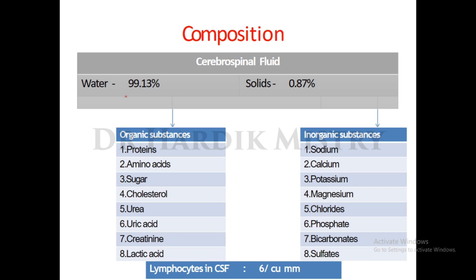Composition of CSF: water 99.13%, solids 0.87%. The solids include organic substances such as proteins, amino acids, sugar, cholesterol, urea, uric acid, creatinine, and lactic acid. Inorganic substances include sodium, calcium, potassium, magnesium, fluorides, phosphate, bicarbonates, and sulfates. Lymphocytes in the CSF are around 6 per cubic mm.